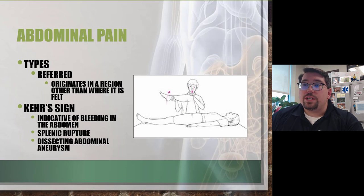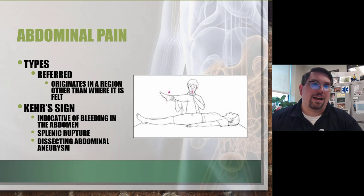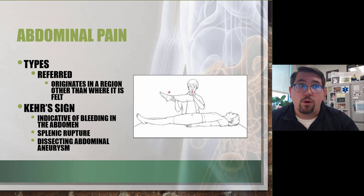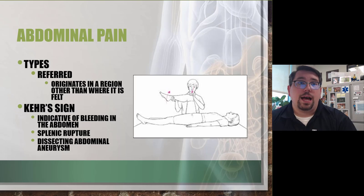Referred pain originates from another location and progresses to a different area. It's not a true pain-producing mechanism at the site where it's felt. There are many natural pathways from various organs that pass through regions where the organ formed during embryonic development. For example, the afferent neural pathway from the diaphragm enters the spinal column at the level of the fourth cervical vertebra.